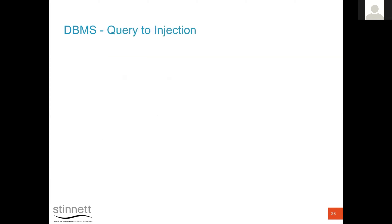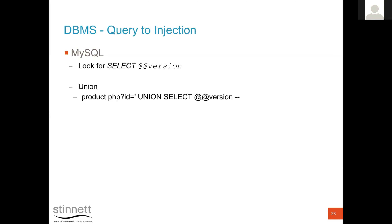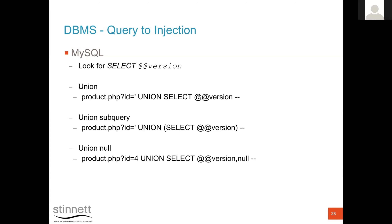Once you've detected injection, how do you determine if it's MySQL? The easiest way is to use the VERSION() command. You can do this with a UNION — id=x UNION SELECT @@version — as a global resource that doesn't require specifying a table. You can also use a subquery, or a UNION with NULL columns like: UNION SELECT version(), NULL -- where the first column returns the MySQL version and the second column is null.